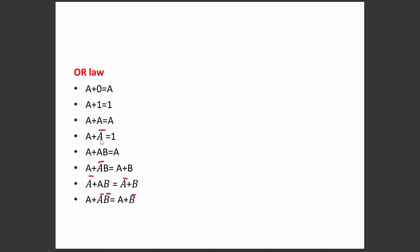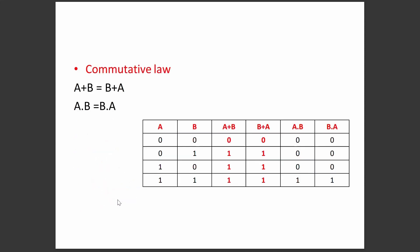The OR laws include: A+0=A, A+1=1, A+A=A, A+A-bar=1. Additional theorems: A + A·B = A; A + A-bar·B = A + B; A-bar + A·B = A-bar + B; and A + A-bar·B-bar = A + B-bar.